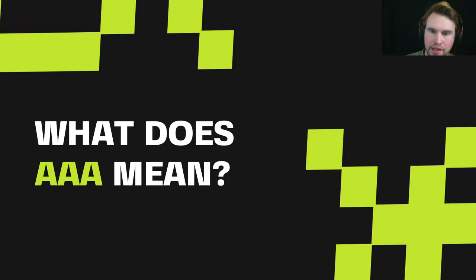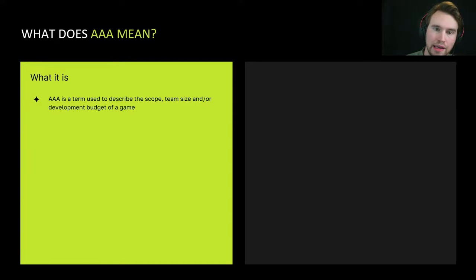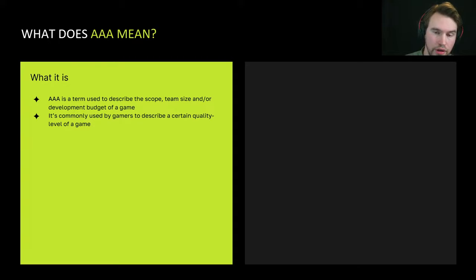Let's talk about what AAA means, because it's a phrase used very often in the industry. AAA games or AAA game development is a term to describe the scope or size of a project — both in terms of content and the size of the team making the game. It can also indicate the development budget. A AAA game typically has a much larger budget, team size, and scope than an indie game. It's also commonly used by gamers to describe a certain quality level.